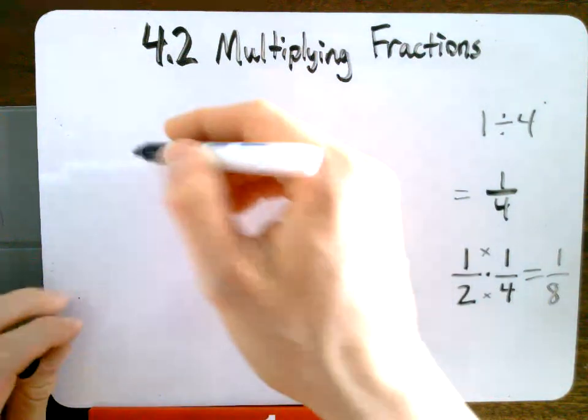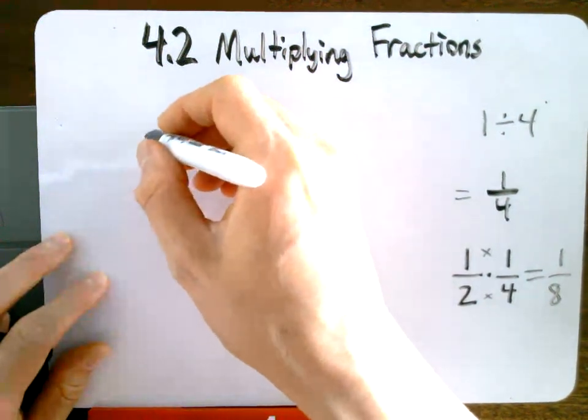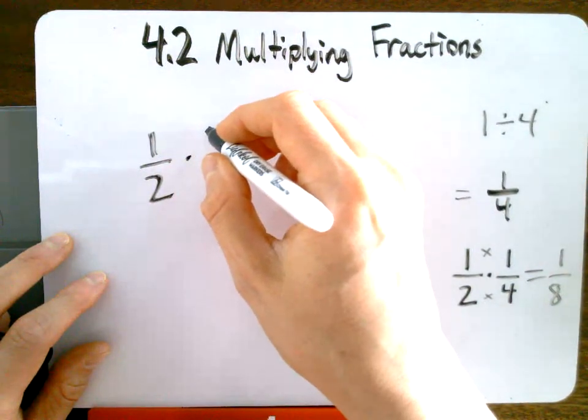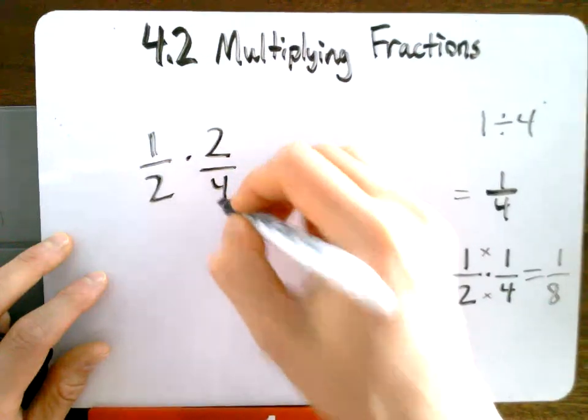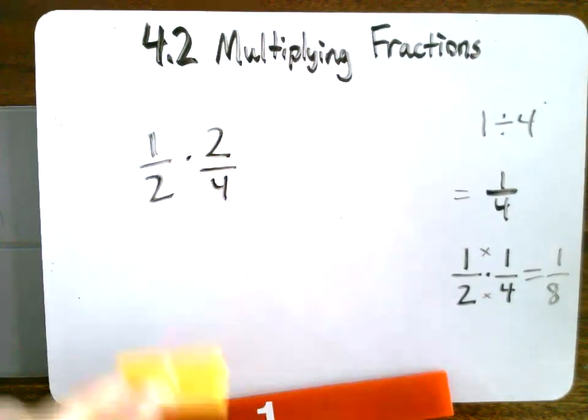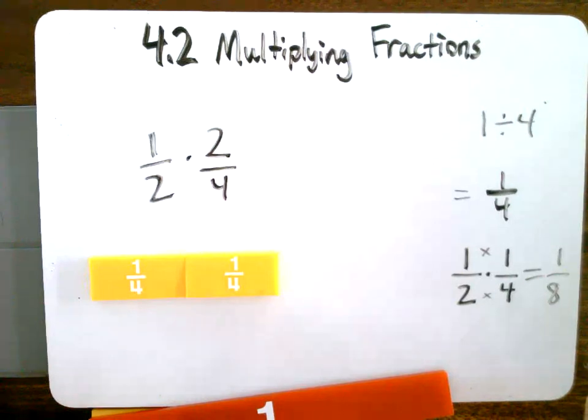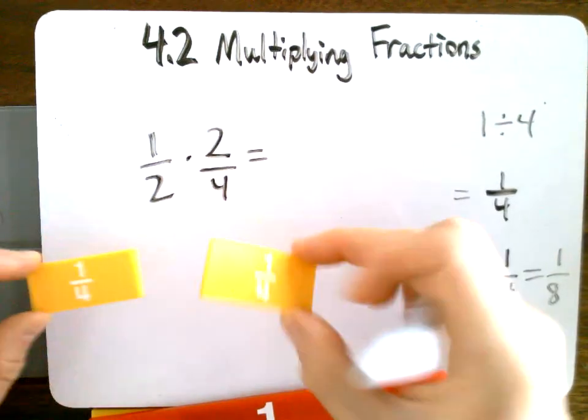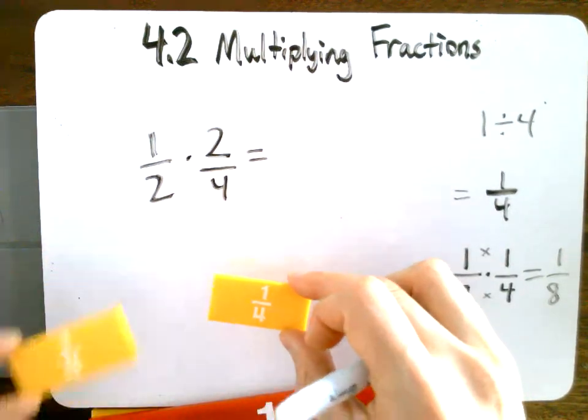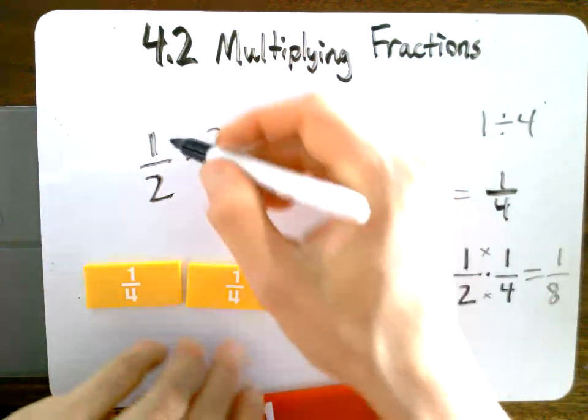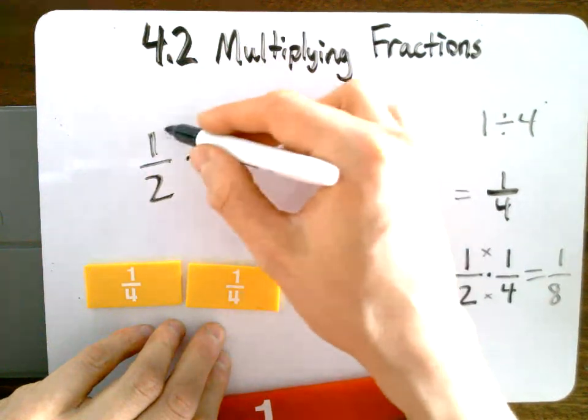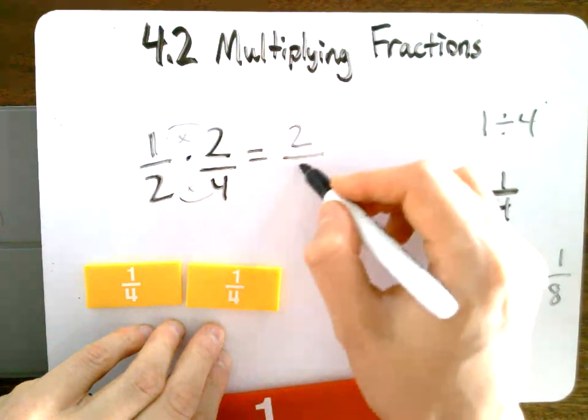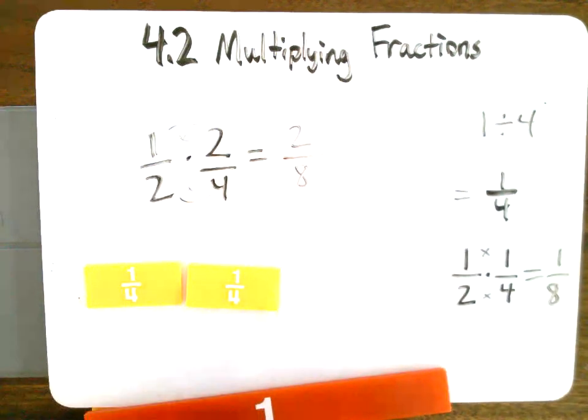But the same thing could apply if I do 1 half times, let's do 2 fourths, right? So imagine now that I have 2 of these fourths, and I want 1 half of that. Well, I can multiply across the top. Of course, if you do it visually like this, you probably know already it's 1 fourth, right? But I could multiply across the top, 1 times 2, that's 2, and multiply the denominators as well. 2 times 4 is 8.